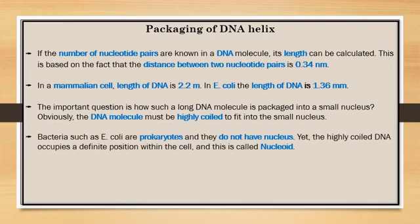Bacteria such as E. coli are prokaryotes and they do not have a nucleus. Prokaryotes like E. coli do not have a nuclear membrane. Instead, they have a nucleoid structure with one circular chromosome.